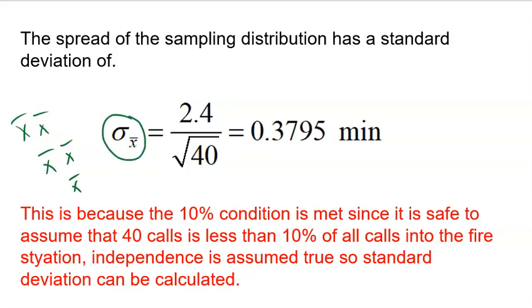Now, this is where it's important for you to understand the formula. The formula is sigma divided by the square root of sample size. Now, 2.4 is the standard deviation for one phone call.